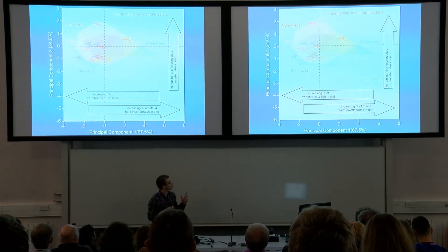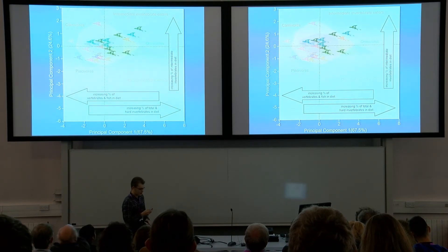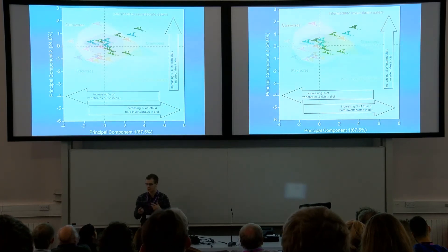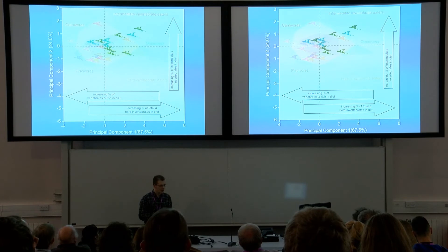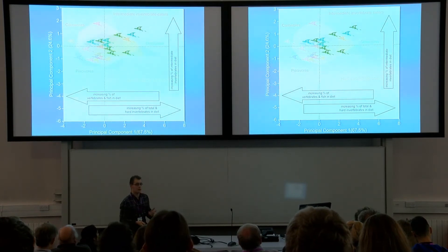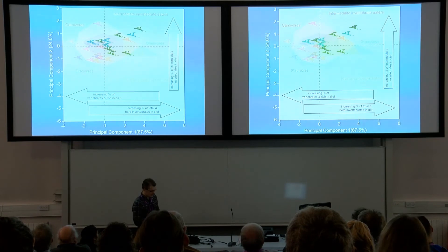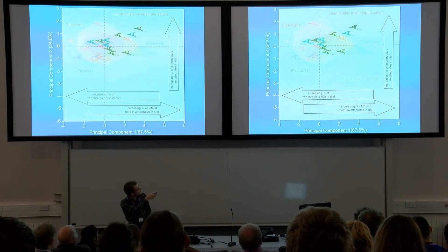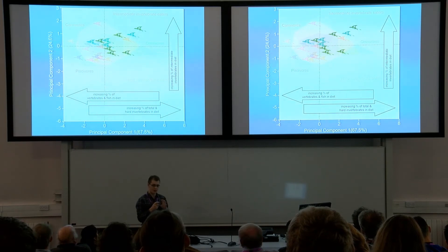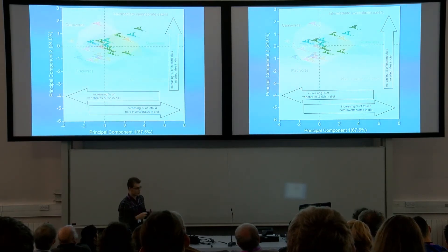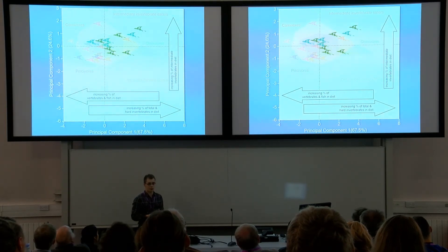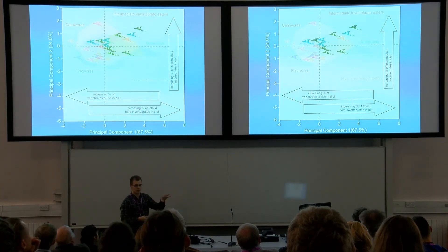Adding pterosaurs from the more invertebrate side of the figure: Dorygnathus in turquoise has been thought of as either a piscivore or a consumer of coastal crustaceans, and its spread along PC1 indicates both may have been the case. Pterodactylus in dark green has been considered a dietary generalist. The relative clustering of modern reptiles within their guilds tells me that the spread of Dorygnathus and Pterodactylus reflects genuine dietary variation rather than random scatter in multivariate space.